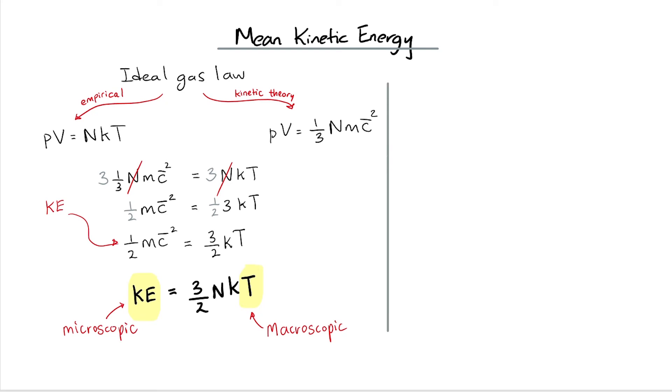What if I don't know the number of molecules in the gas, but instead we're given the amount of gas in moles? Capital N is equal to small n, the number of moles, times the Avogadro constant.